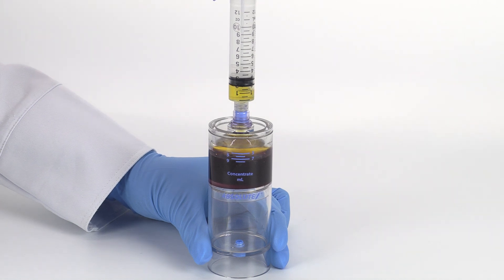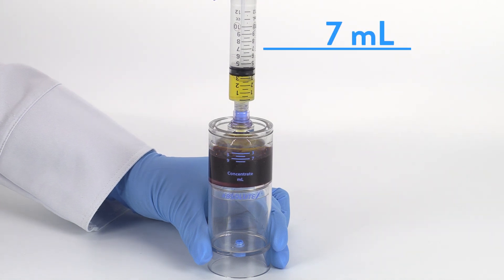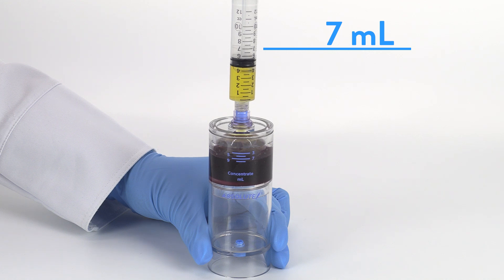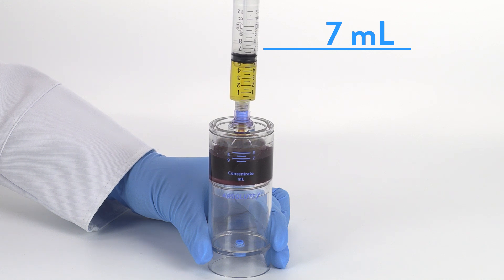Attach the 12 milliliter syringe to the needleless port and aspirate 7 milliliters or the desired amount of platelet-rich plasma.